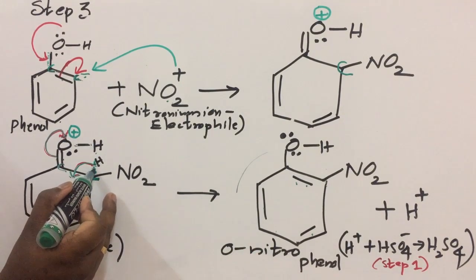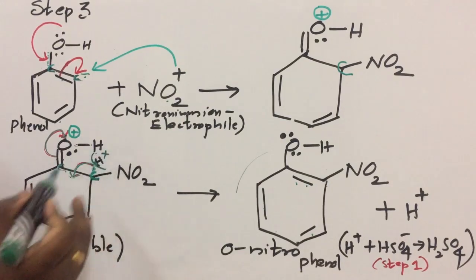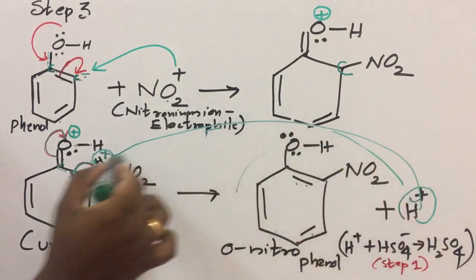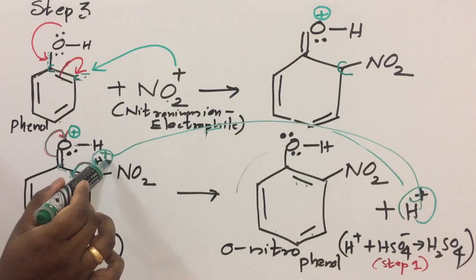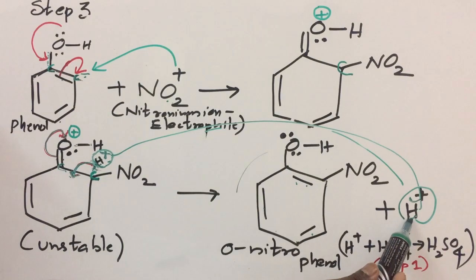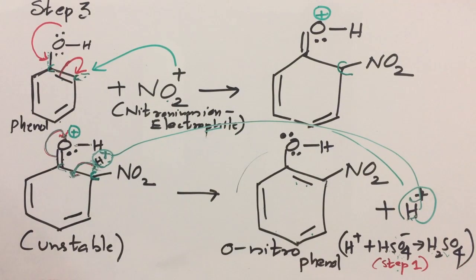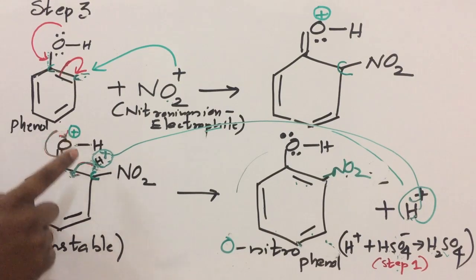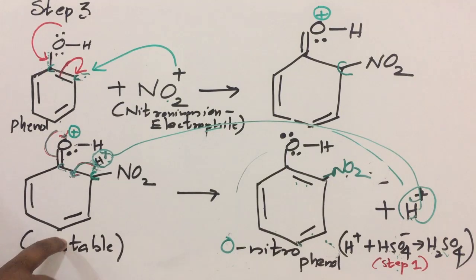Additionally, after shifting these two electrons, the H+ is removed from the intermediate as a byproduct. So H+ is the main byproduct of the reaction. This H+ combines with HSO4- formed in step one to regenerate sulfuric acid — so sulfuric acid is regenerated in this same reaction. Similarly, the H+ from the para position will be replaced and the product becomes para-nitrophenol.